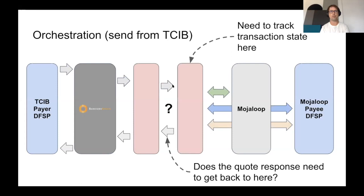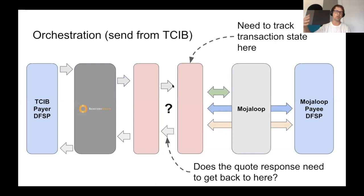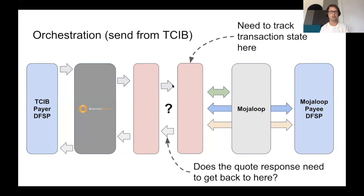The other thing to figure out is the incompatibility between the messaging flows. On the TCIB system it is a simple request-response, whereas on the Mojaloop side we have a lookup, a quote, and a transfer. So where does orchestration happen? When a system receives a message from the TCIB system to initiate a transfer, who is responsible for orchestrating all the steps required on Mojaloop? Where does that happen, and which components run by which entity handle all of that?